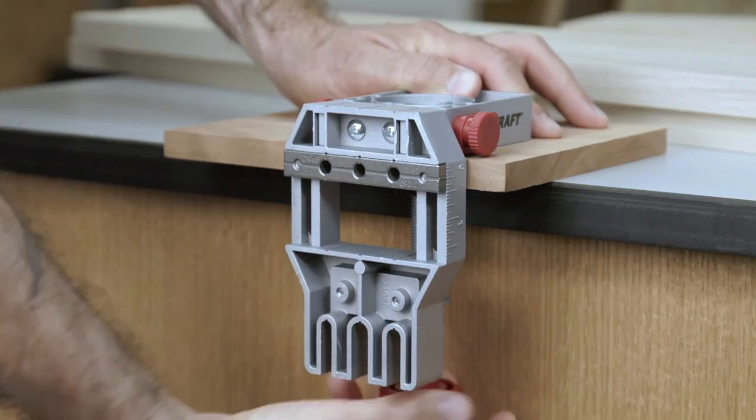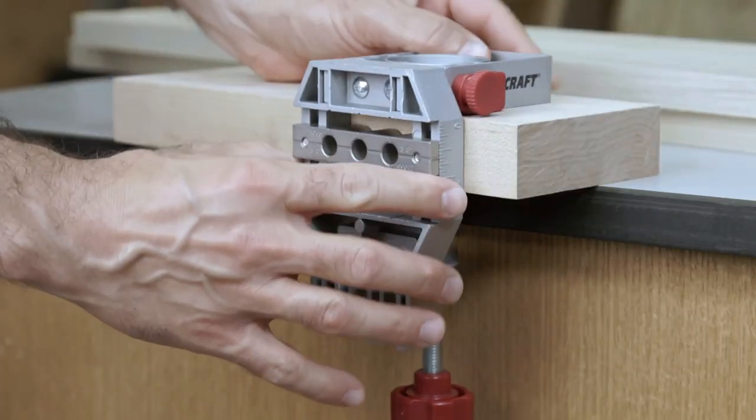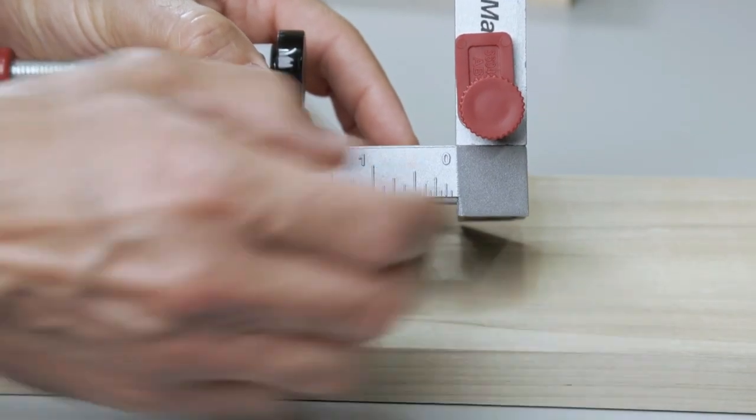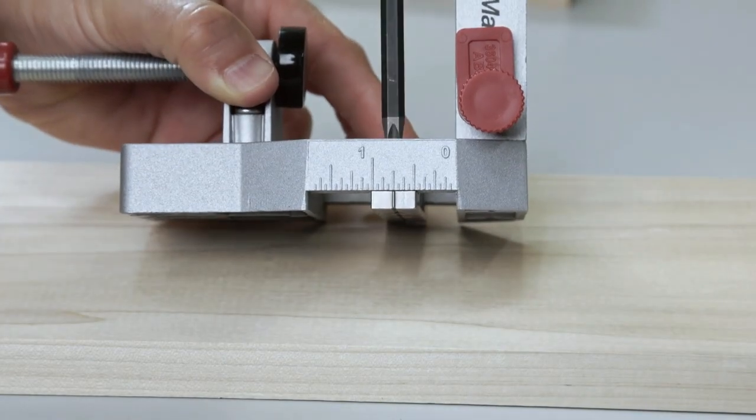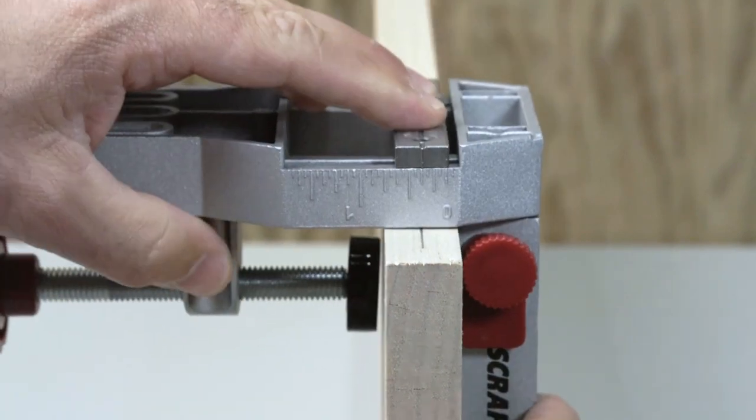Each hardened steel drill block is adjustable to accept and align center dowel holes on boards from 1 1/2 inch up to 3 inch. Built-in scales help to align and center your dowels.